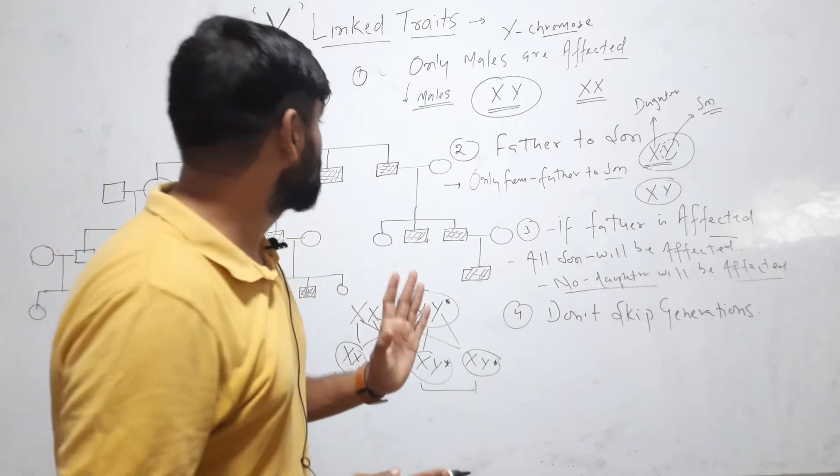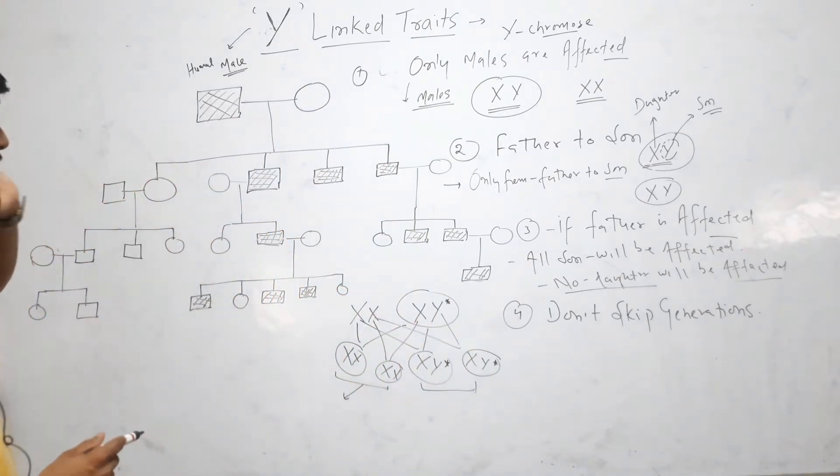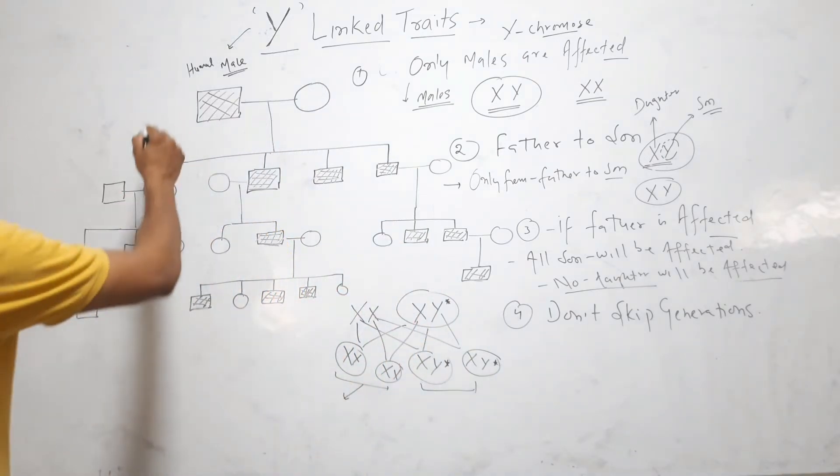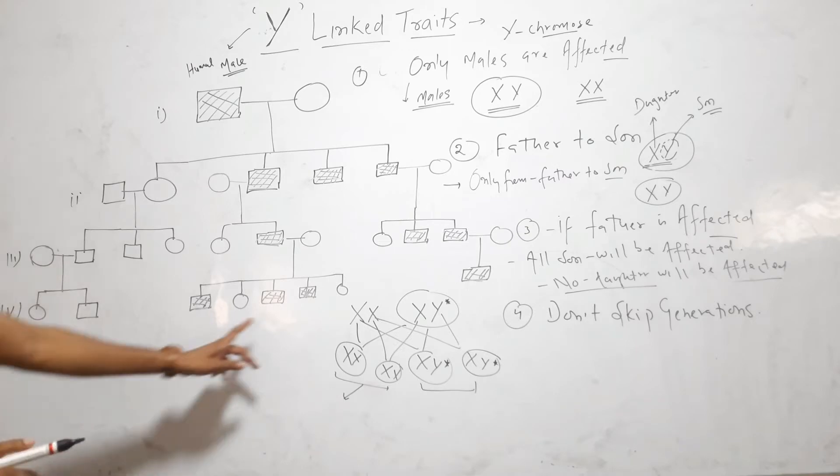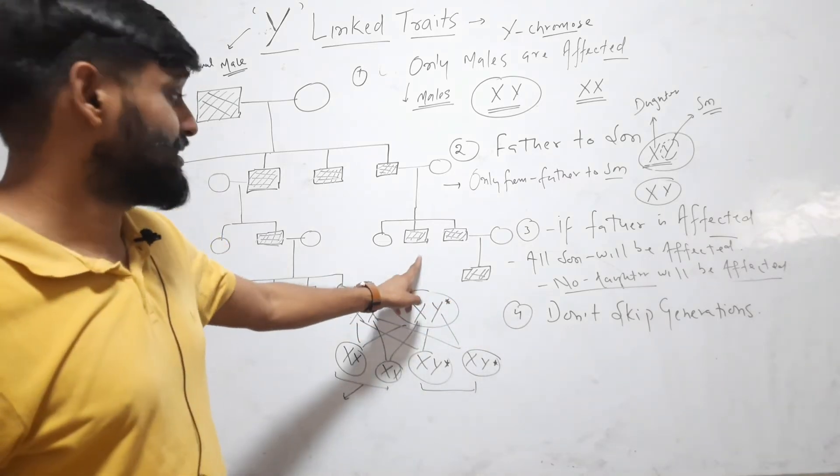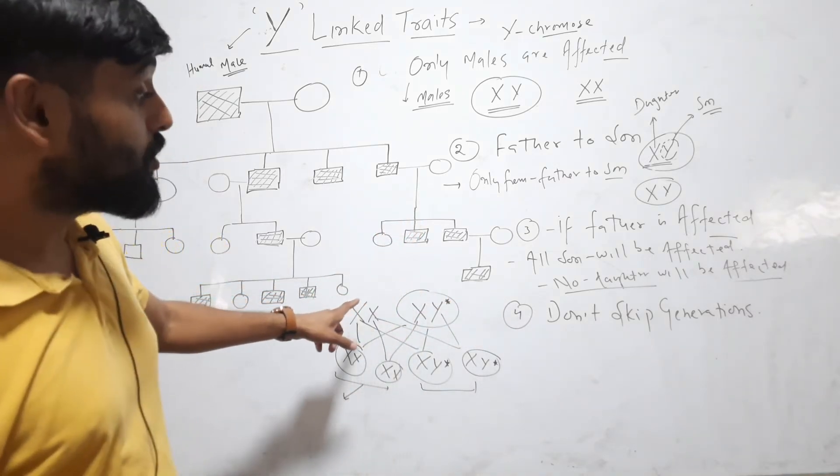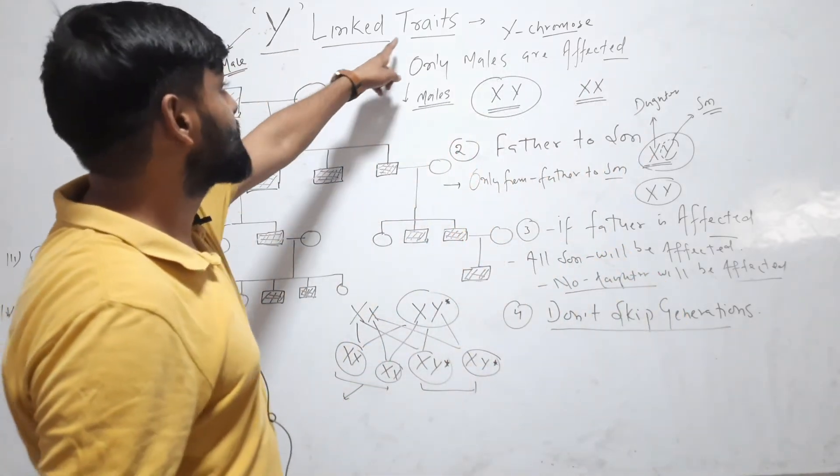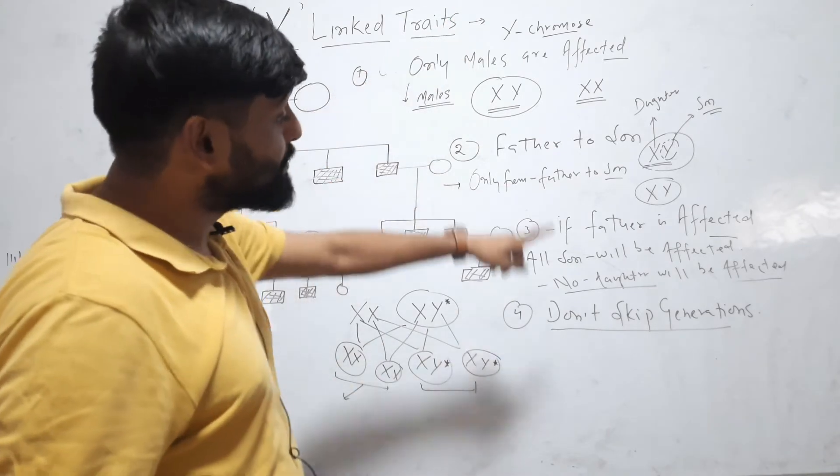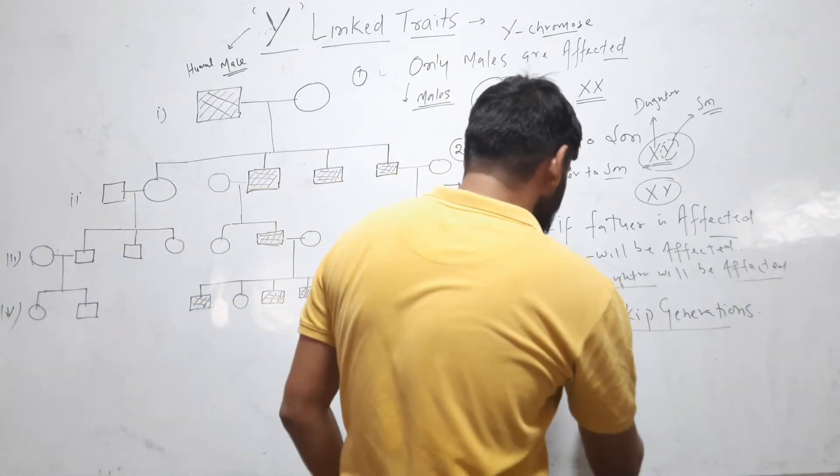Here you can see that in all the generations, generation 1, 2, 3 and generation 4, you will find affected persons or affected son, affected males. So it does not skip generation. It appears, if it is present, this trait is present, then it appears in every generation.